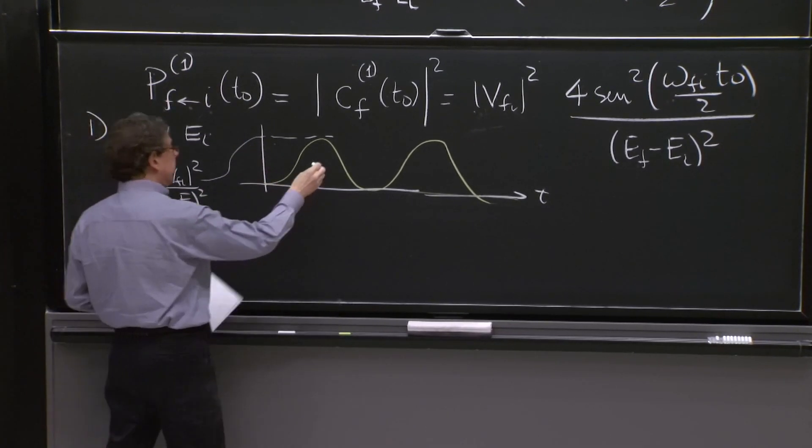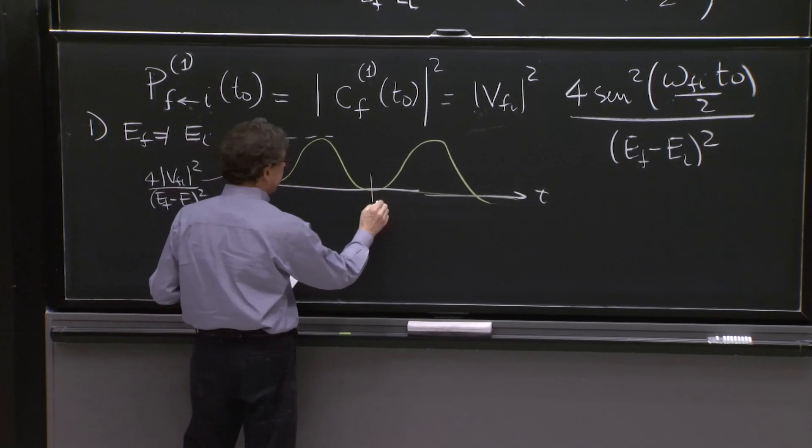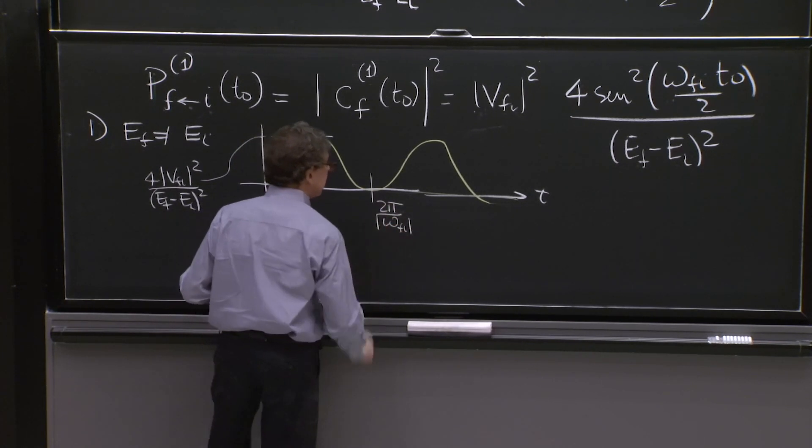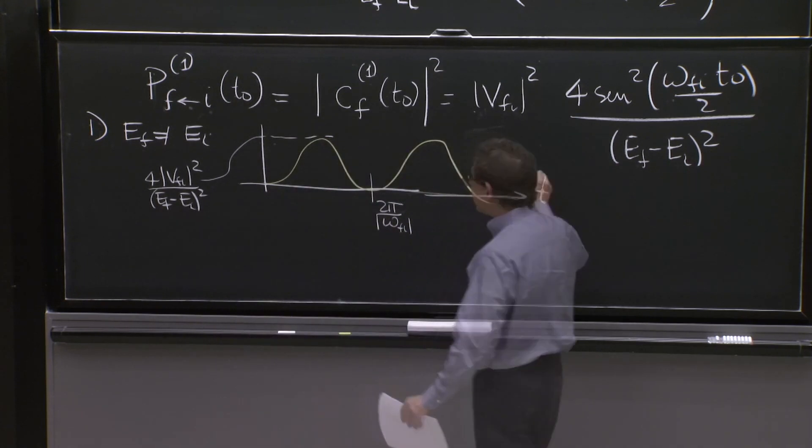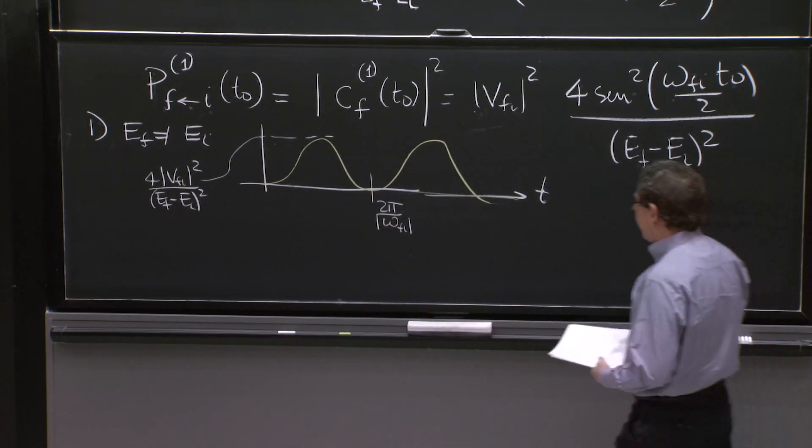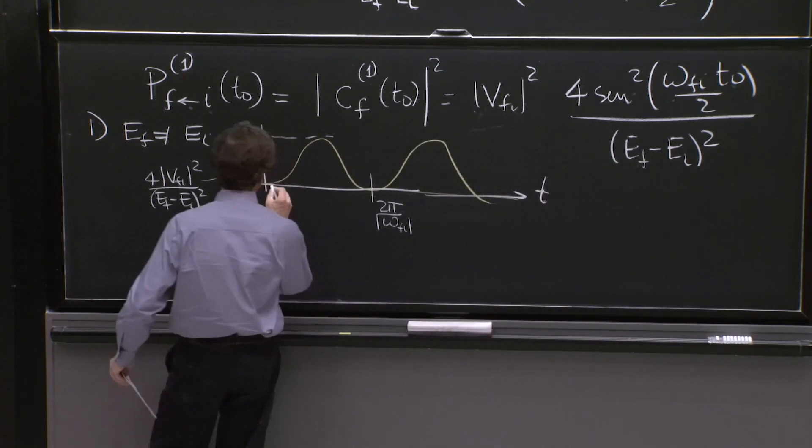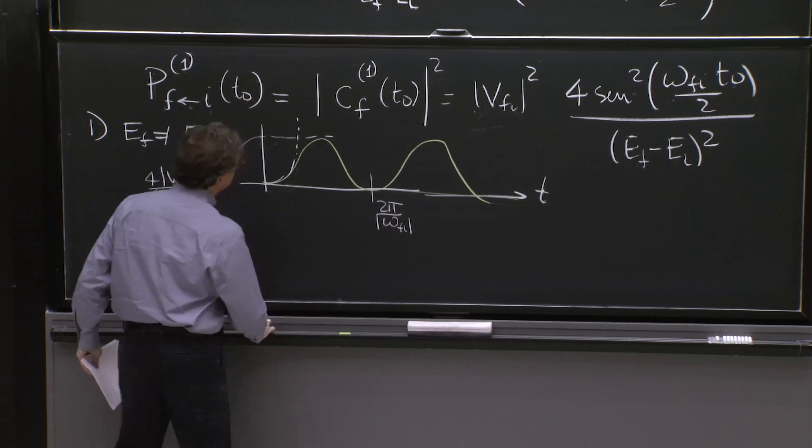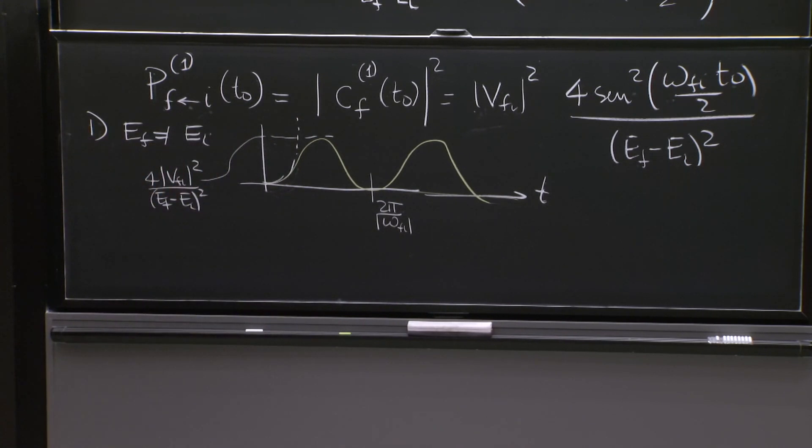And it's oscillatory. It goes to 0, again, at time 2 pi over omega fi. OK, so this is the oscillation. Actually, for a small time, this grows quadratically. And then it starts blowing up.